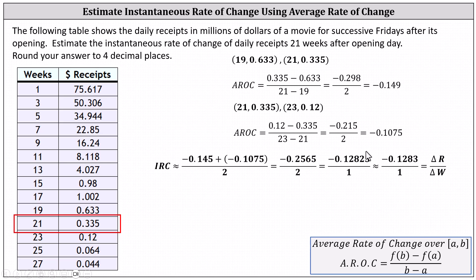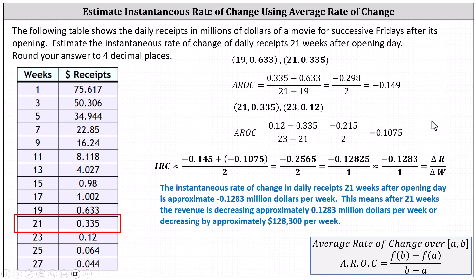To understand the meaning of this, it's helpful to write it as a fraction with a denominator of one. Rounding to four decimal places gives us negative 0.1283 divided by one. The numerator measures the change in receipts in millions of dollars, and the denominator measures the change in time in weeks. This indicates the instantaneous rate of change in daily receipts 21 weeks after opening day is approximately negative 0.1283 million dollars per week.